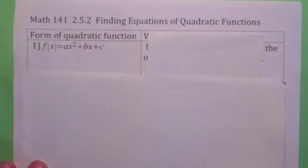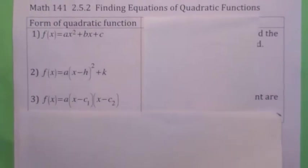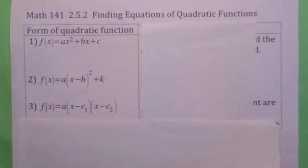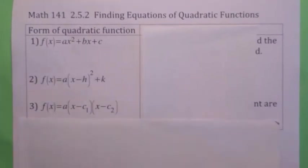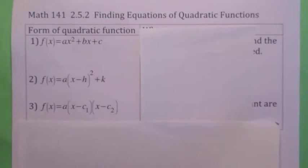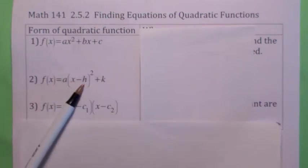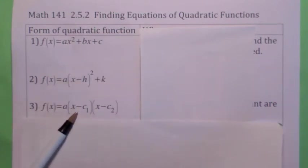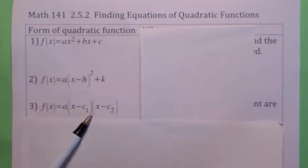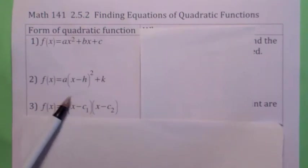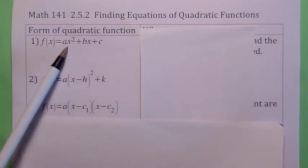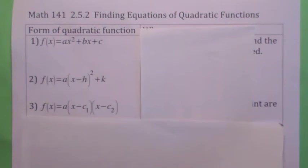There are really three forms we've looked at for quadratic functions. Depending on what you're given, you might want to write it in one of these three forms. Obviously if you're given the vertex, if you can read the vertex, you'd use that form to write the equation. If you're given the x-intercepts — if you can read them from the graph, perhaps — you'd use the factored form. And you'd use the standard form if you can't use the other two.